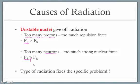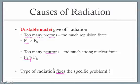When these unstable nuclei give off radiation, they give off a specific type of radiation that fixes the specific problem. If you've got too many protons, you're going to give off radiation that reduces the number of protons. If you have too many neutrons, you're going to give off radiation that reduces the number of neutrons. A specific type fixes a specific problem, and part of our job today is to identify what that specific radiation is to fix the nucleus we're currently working with.